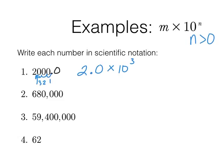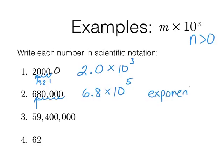Important note: the exponent does NOT equal the number of zeros. In 680,000 there are four zeros but the exponent is 5, because the digit 8 takes one of those decimal places we're counting. So do not think exponent equals number of zeros. For 59,400,000: place the decimal after 5 to get 5.94, count back 7 places, so 5.94 times 10 to the 7th. For 62: it's 6.2 times 10 to the first, or just 6.2 times 10 — still valid scientific notation.